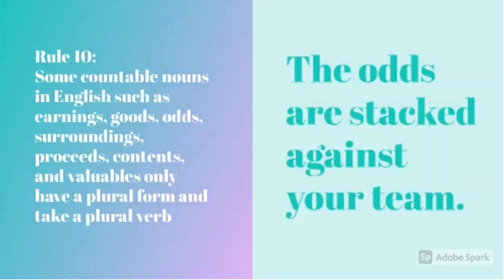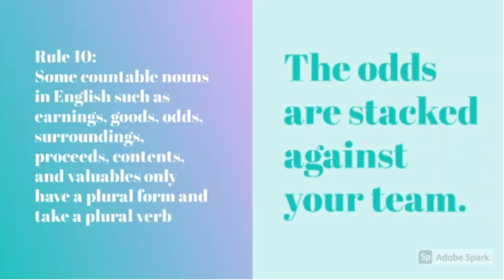Rule 10 is, some countable nouns in English such as earnings, goods, odds, surroundings, proceeds, contents, and valuables only have a plural form and take a plural verb. An example is, the odds are stacked against your team. Here, we can see that we have used odds, so are is the verb that we are going to use.